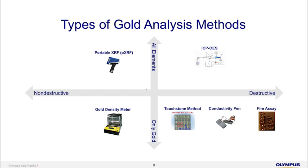For a non-destructive method, there is density testing. A density meter is dependent on the weight of the sample, and by measuring the weight you can estimate the karatage. However, density meters have issues when measuring items with gemstones or diamonds. Also, if the sample is fake gold coated over tungsten or lead, we cannot identify it with a density meter because the density of tungsten and lead is similar to that of gold.